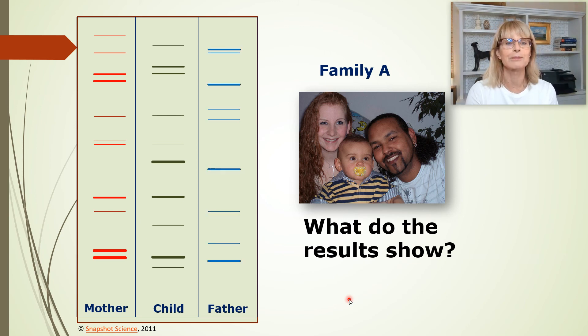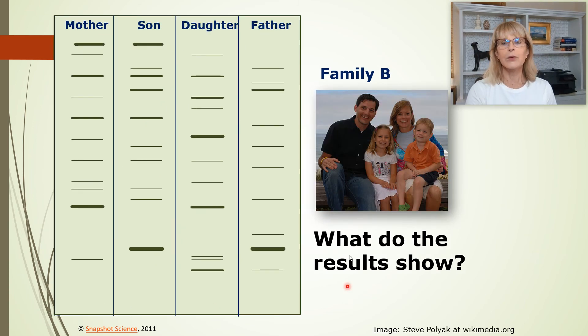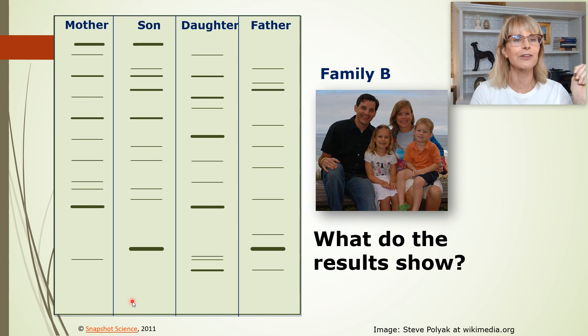Let's do one more. Here we've got family B. Again, this is not their DNA. So here's the son. Let us find in the son any bands of DNA that did not come from the mother. This one did not come from the mother. Is it there in this man? It is.